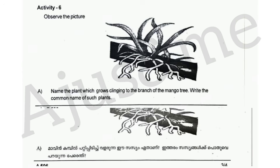Activity 6. Observe the picture. Name the plant which grows clinging to the branch of the mango tree. Write the common name of such plants.